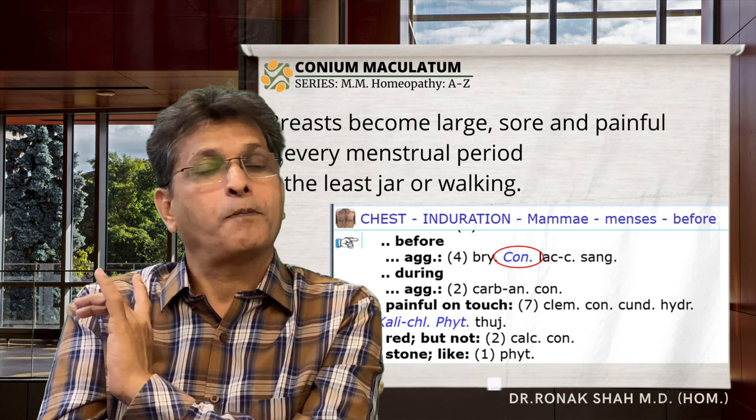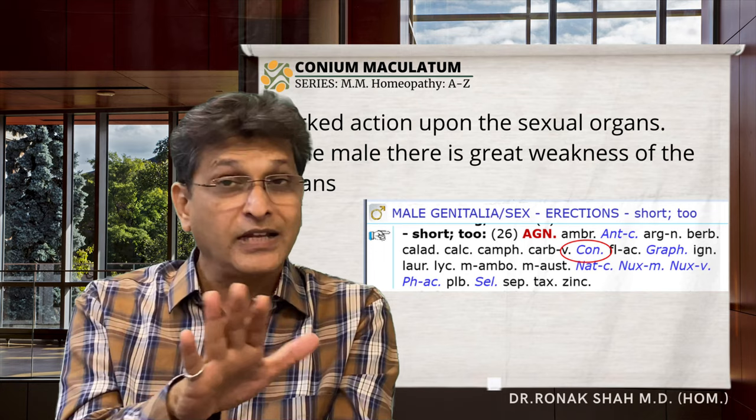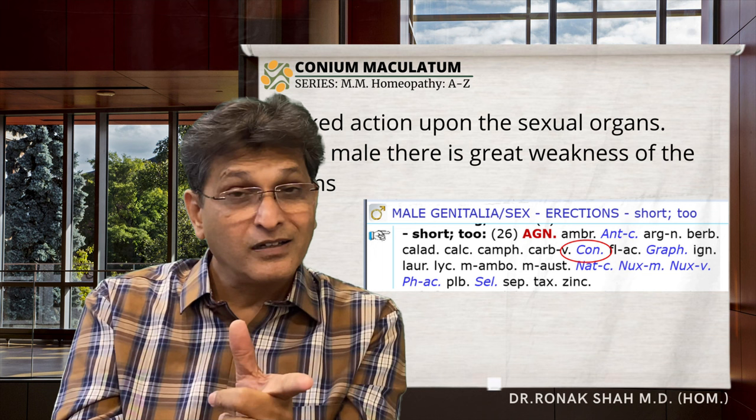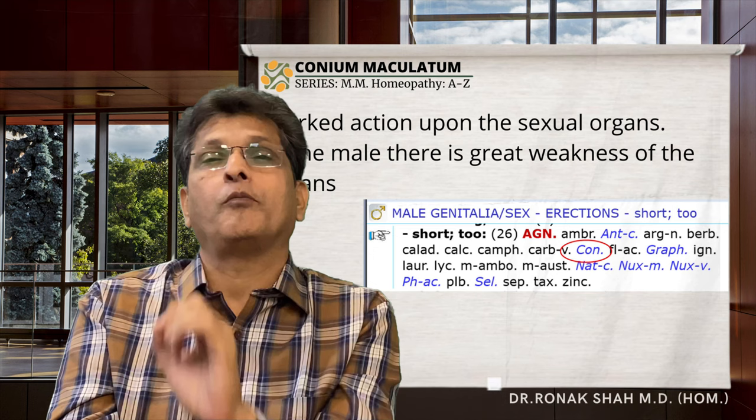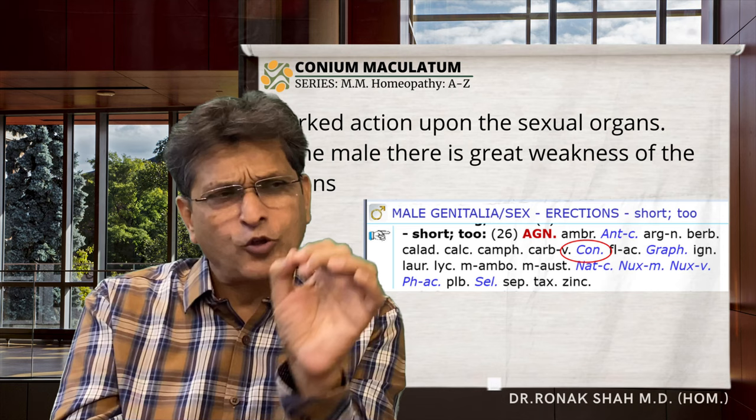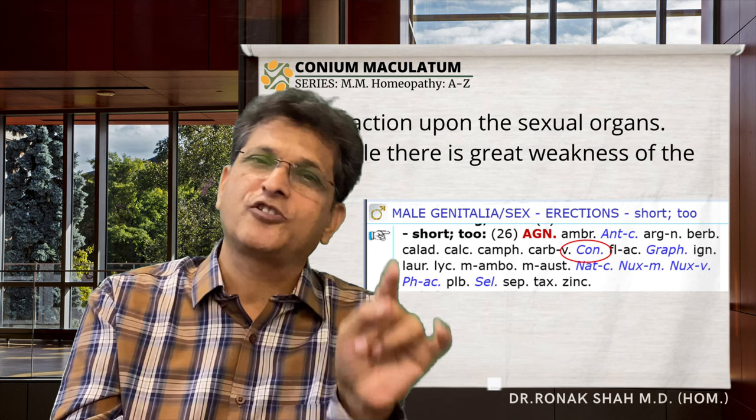Conium has marked action on the sexual organs. In the male, there is great weakness of the organs. He has intense desire and amorous thoughts but is unable to perform. The patient has an erection at every thought or presence of a woman. The erection is insufficient and lasts only a short time. You can compare with Agnus Castus also.